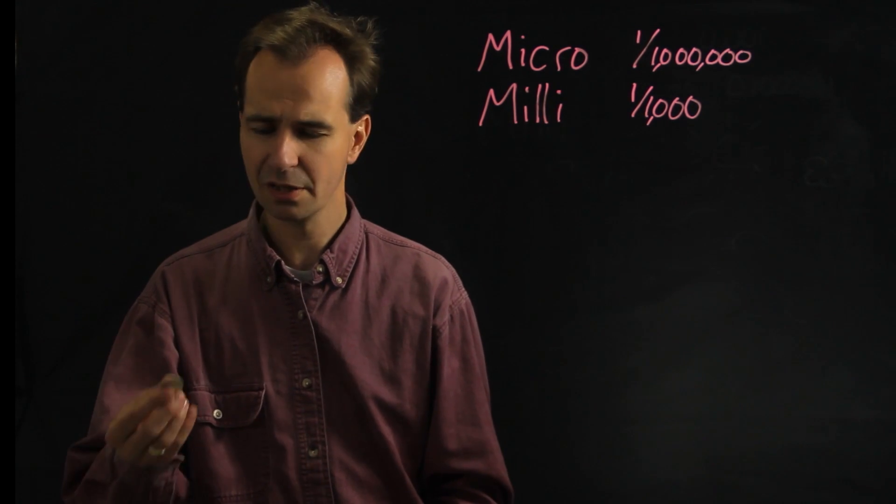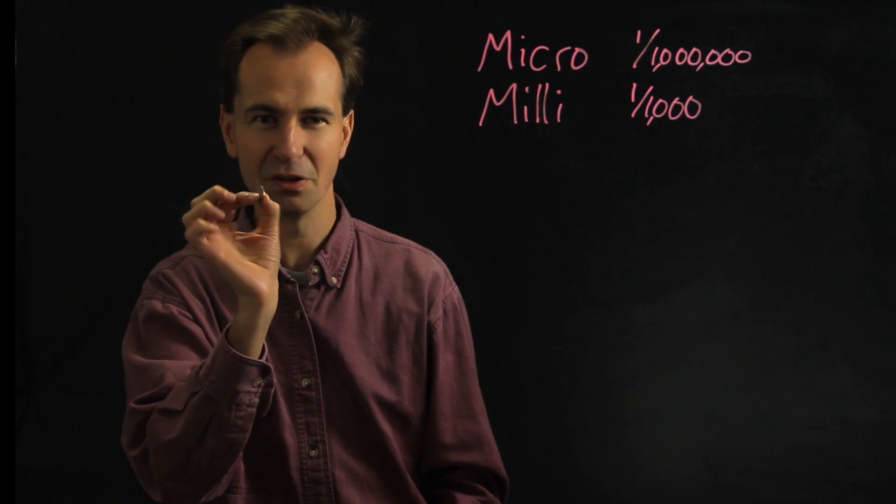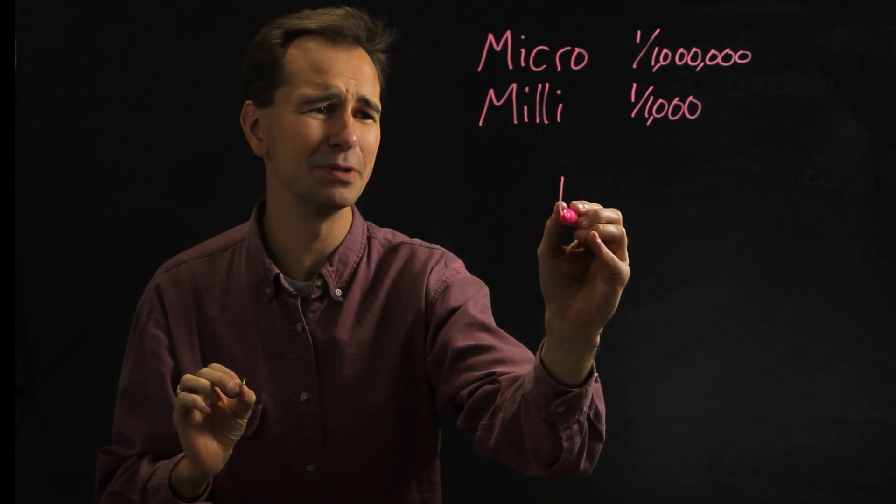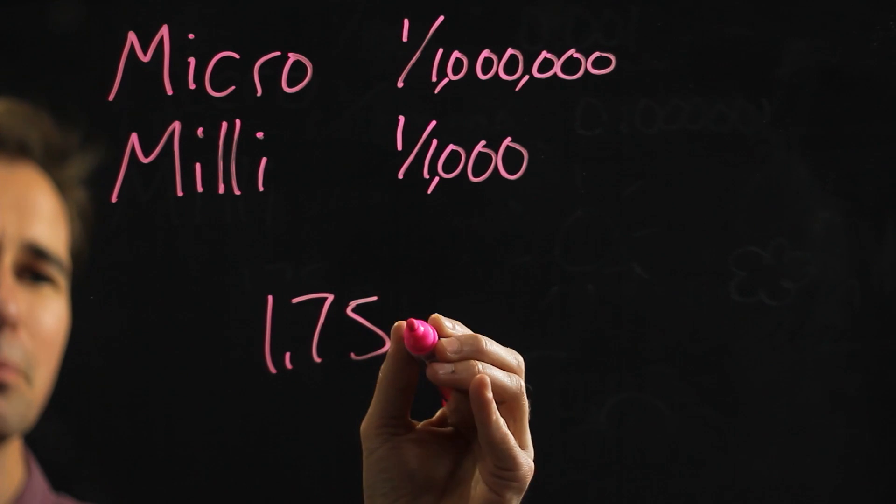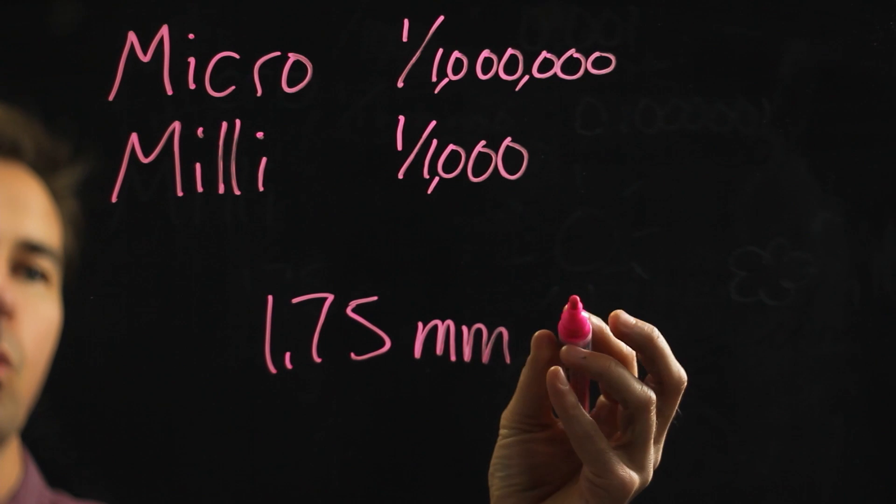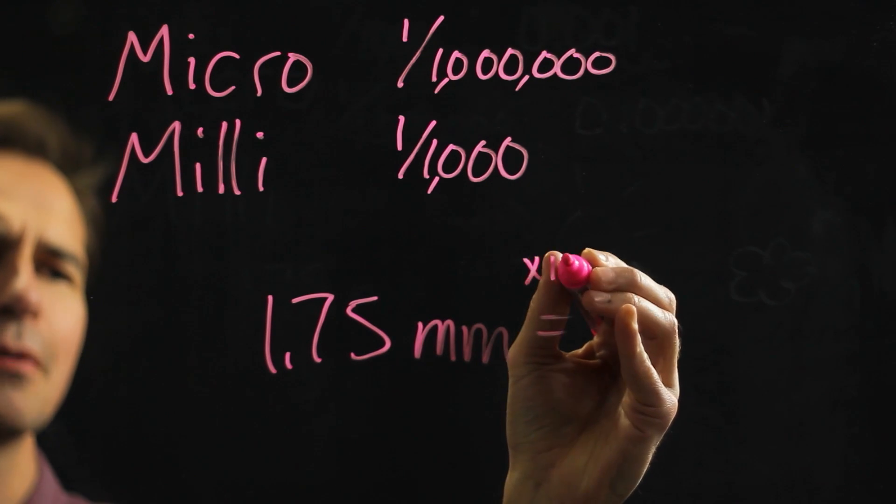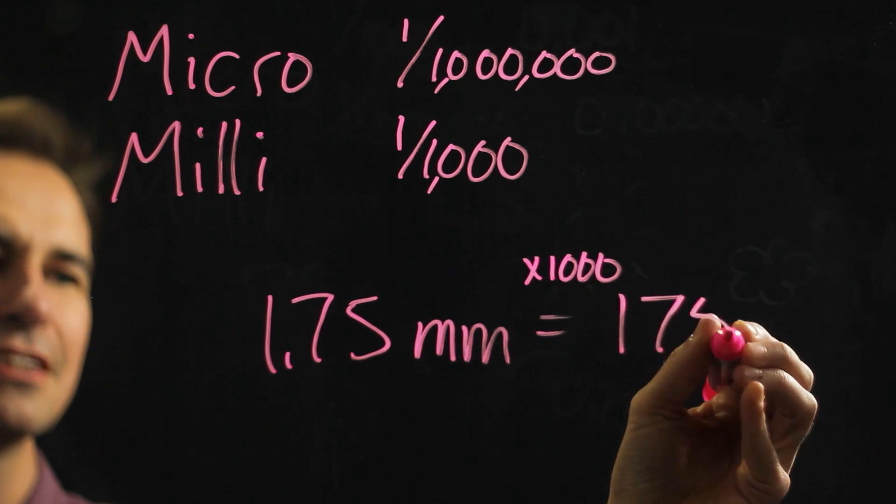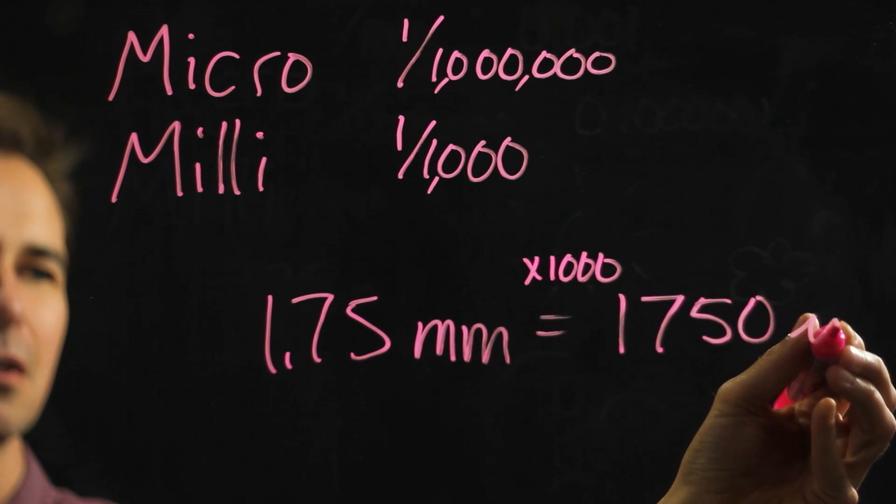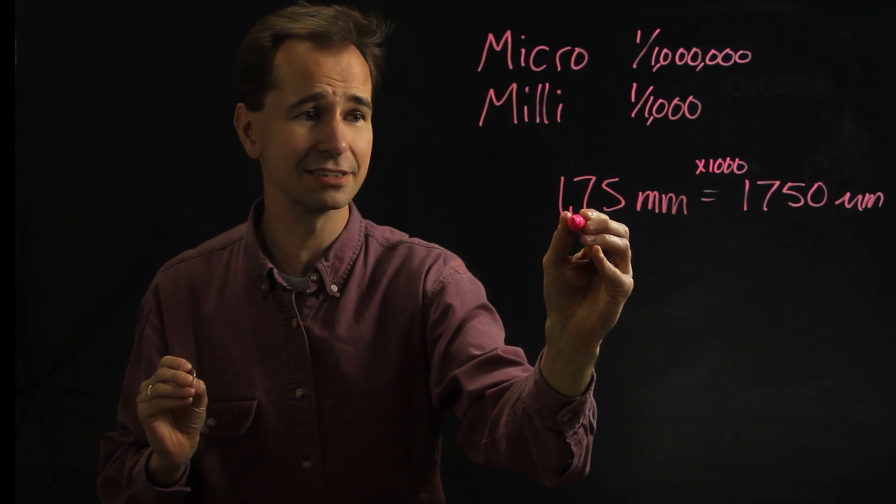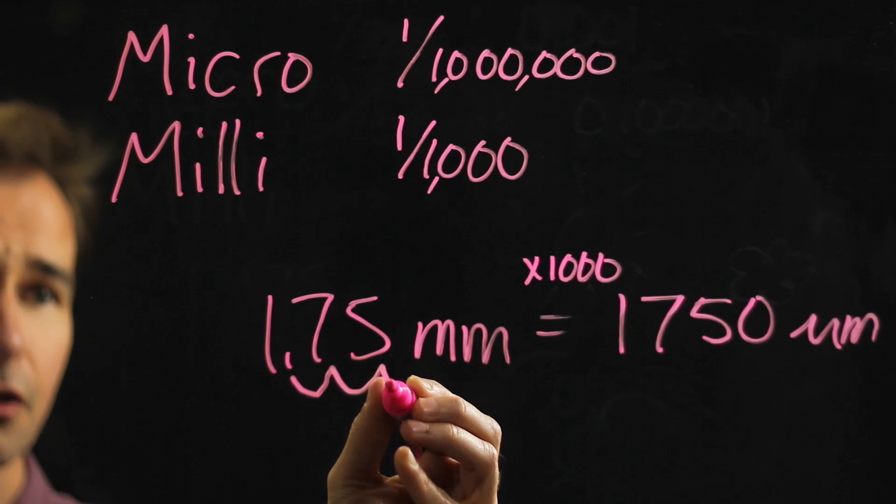One good example is if you take a quarter. You can see how thin that is - it's 1.75 millimeters. Suppose you wanted to know how many micrometers that is. You just multiply that by a thousand. So it turns out it's 1,750 micrometers. It's really just a matter of taking this decimal and moving it three spots.